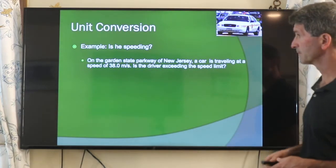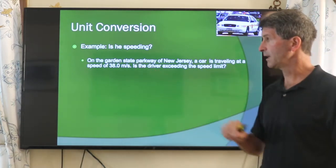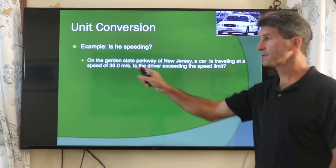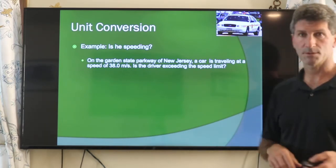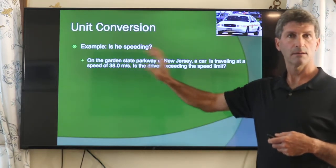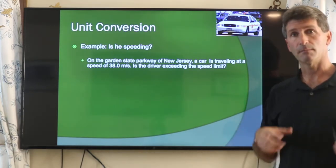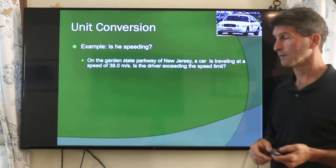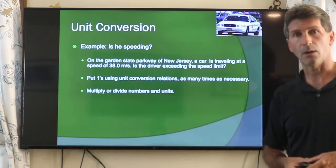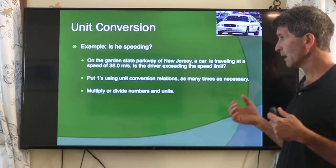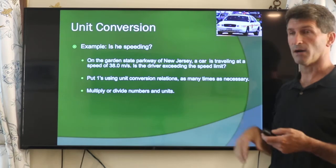Let's do another example. On the Garden State Parkway, a car is traveling at a speed of 38 meters per second — SI units for speed. Is the driver exceeding the speed limit? We want to convert this SI speed into a US customary unit, miles per hour, which is what we typically see on posted speed limit signs. We're going to use a factor of 1 to do this conversion, deciding what to multiply or divide by — numerator or denominator.